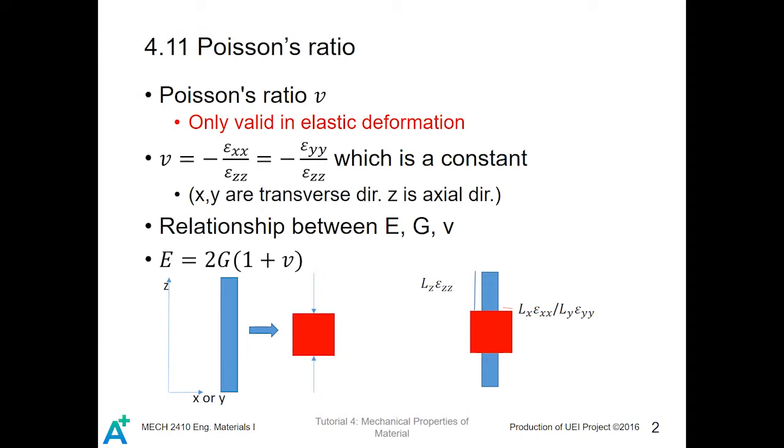Poisson's ratio relates the strain value in the transverse direction with the strain value in the axial direction, which is only valid in elastic deformation. See the picture below.